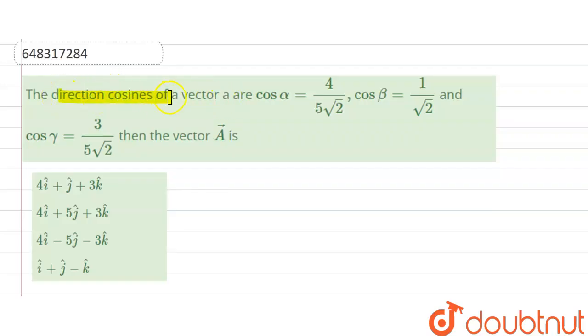The direction cosines of a vector are: cos α = 4/(5√2), cos β = 1/√2, and cos γ = 3/(5√2). Then vector A is...